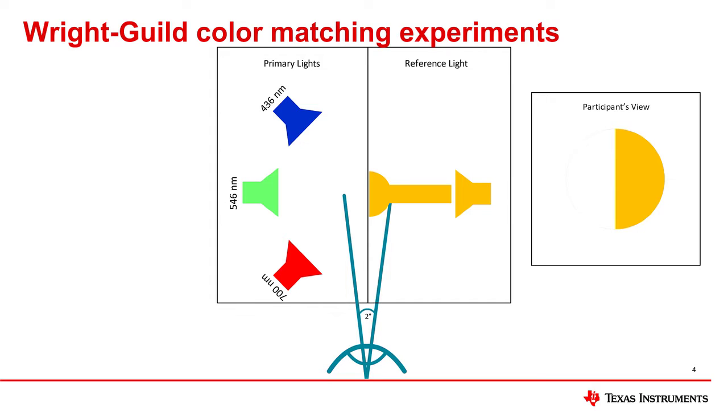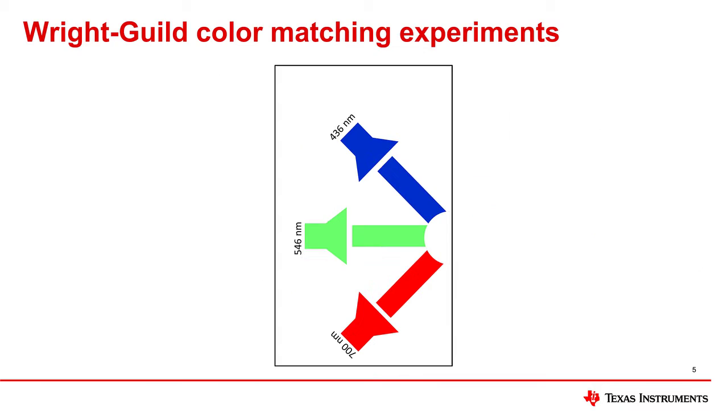Each participant in the experiment was instructed to control the aperture angle of the red, blue, and green lights until the result matched the reference light. This process was then repeated with reference lights across the visible spectrum. If the amount of each source light is increased or decreased, but the ratio of the three stays the same, the resulting color will stay the same, but it will vary in brightness.